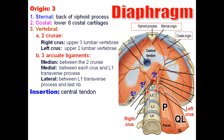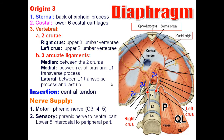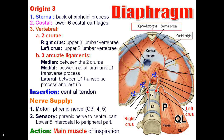The insertion of the diaphragm is into the central tendon. The nerve supply is motor and sensory. The motor nerve supply is the phrenic nerve, which arises from C3, C4, and C5. For sensory supply: the central part of the diaphragm receives sensory fibers from the phrenic nerve, and the peripheral part receives sensory fibers from the lower five intercostal nerves. The action of the diaphragm: it is the main muscle of inspiration.